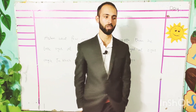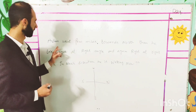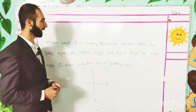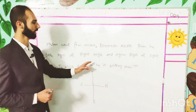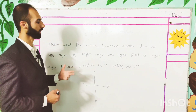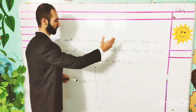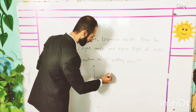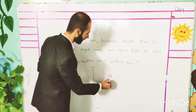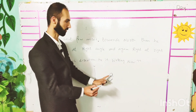Let's move to the first question. First question: Aslam went few miles towards north, then he took a right at right angle, and again right at right angle. In which direction is he walking now? What is it saying? Aslam went few miles towards north. First of all, we will see Aslam — this is Aslam. Aslam is now heading north.